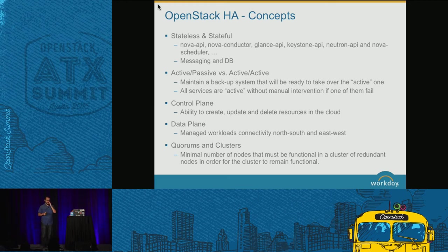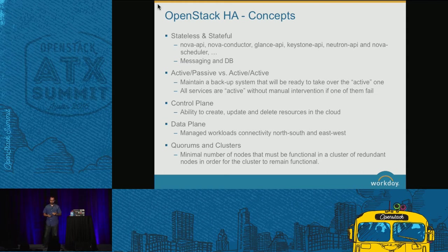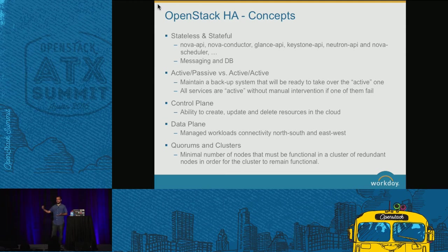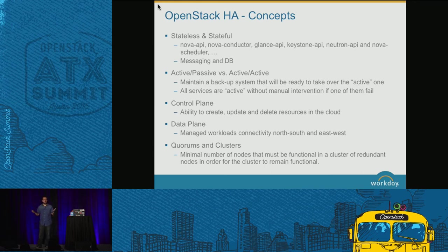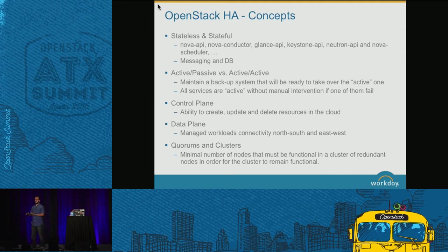Control plane versus data plane: you need to provide HA at both levels. Control plane is the ability to change the configuration of your cloud — creating tenants, changing quotas, creating VMs, changing network configuration, adding security groups. Data plane is the communication from your users or end clients all the way to the VMs and back. I prefer to have a gap in my control plane than in my data plane. I don't want my customer running an application in production and suddenly lose connectivity. It's a private cloud — I have some control over the number of VMs and concurrency, but in the data plane I have zero control over user traffic.